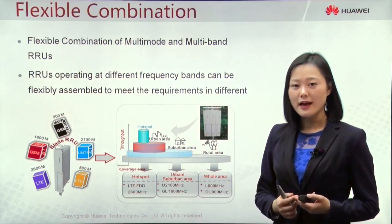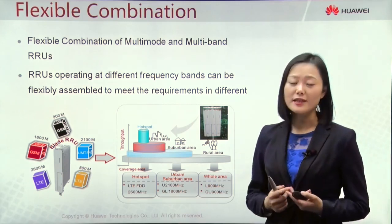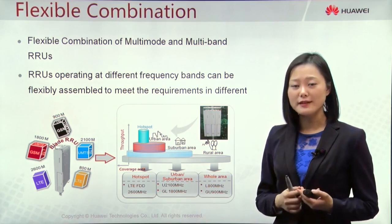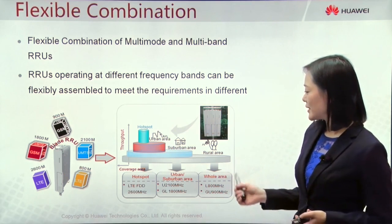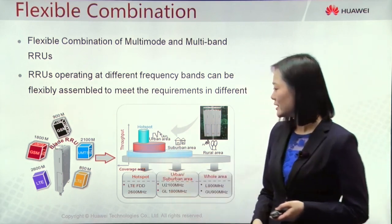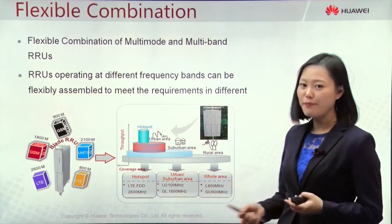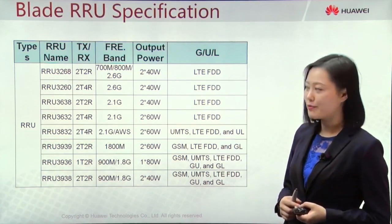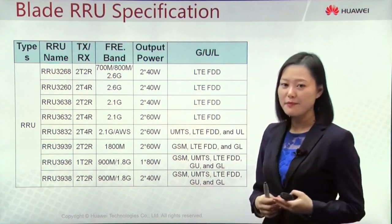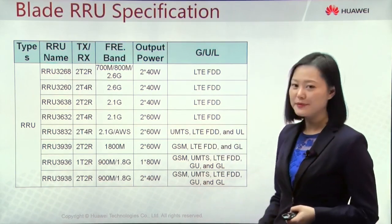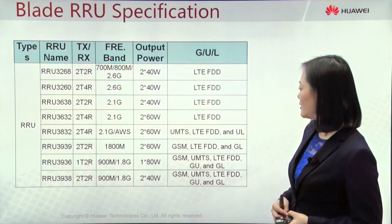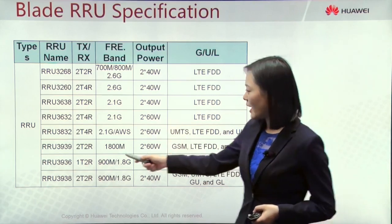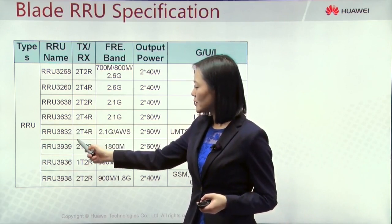Multi-mode and multi-band sites are the mainstream site solution today. The Blade RRU can flexibly combine different modes and different bands together to meet various scenarios — for example, hot spots to improve throughput and blind spots to supply coverage. This table lists various types of Blade RRU products. The top four types only support FDD mode, and the bottom four types support multi-mode. For high output power, you can choose RRU3632, RRU3832, or RRU3939.